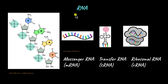DNA contains the information to synthesize proteins, and RNA takes that information and synthesizes the proteins. If you look at the structure of transfer RNA, or tRNA, it looks like a double-stranded structure, but it is not. It is a single strand of RNA that has folded upon itself, forming a cloverleaf-type structure, which is quite interesting and we will learn more about it in higher classes.